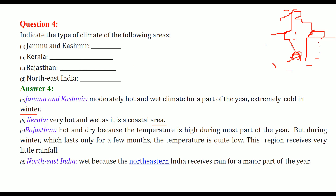Rajasthan, because of its latitude, is hot and dry. Temperature is high during most parts of the year. But in winter, for a few months, the temperature at night becomes very low — it goes up to minus five degrees. And this region receives very little rainfall.